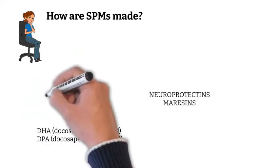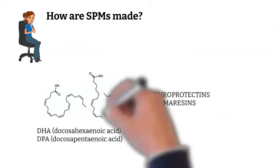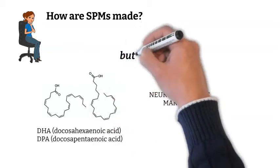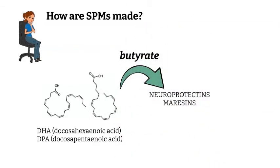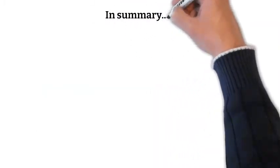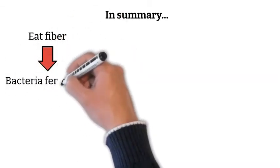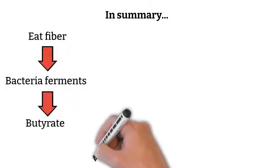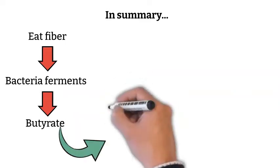And finally, neuroprotectins and maresins are derived from DHA and DPA. So a quick summary about SPMs: we eat fiber, bacteria ferments the fiber, generating butyrate — or we can consume butyrate as a supplement.